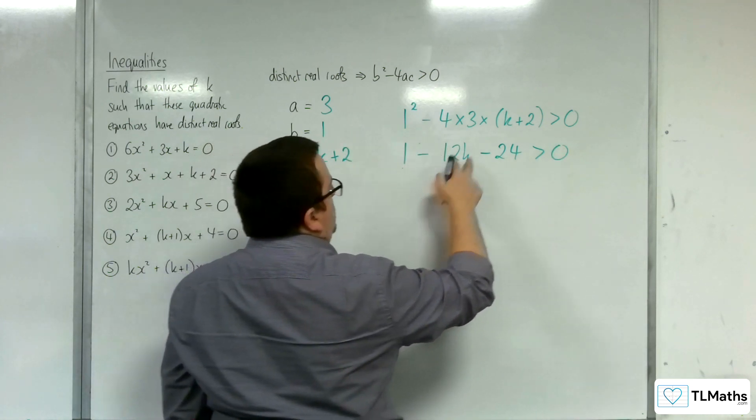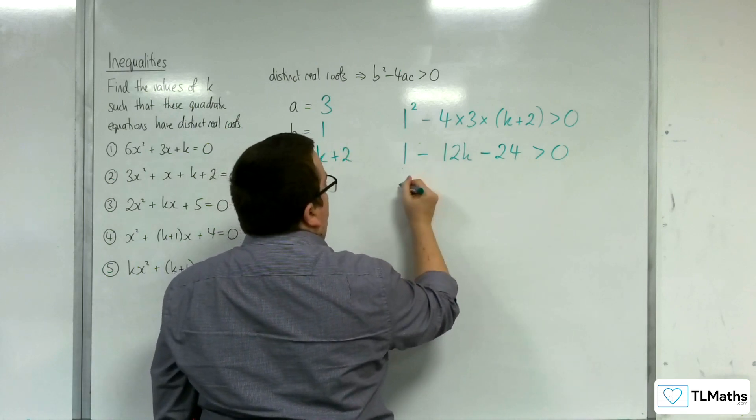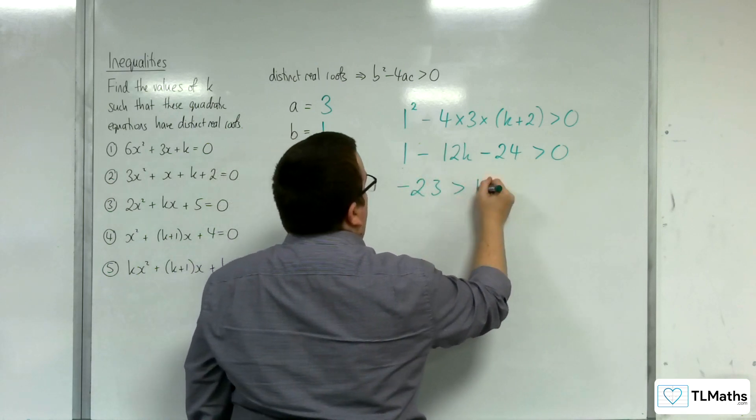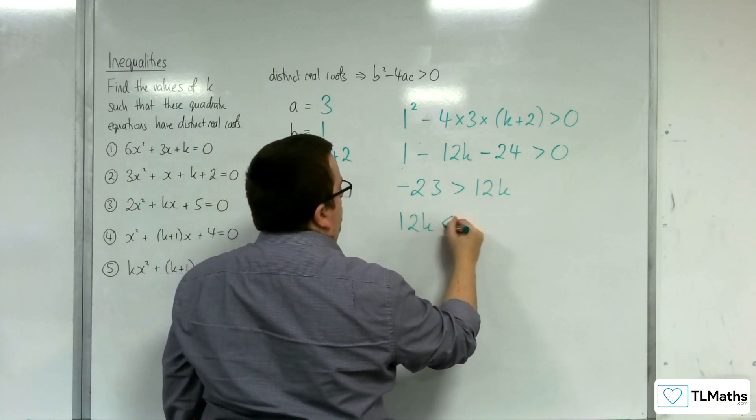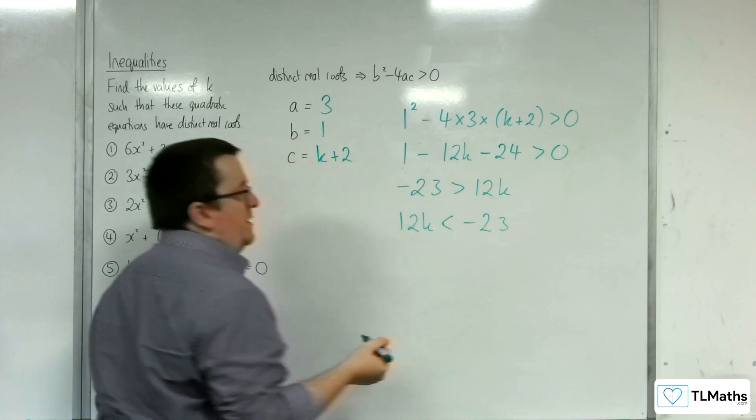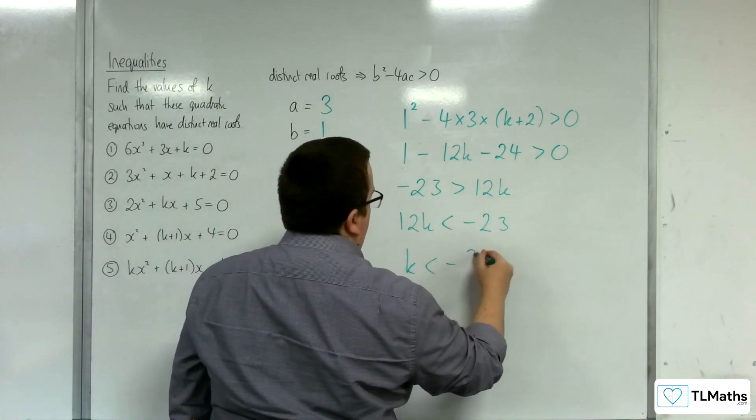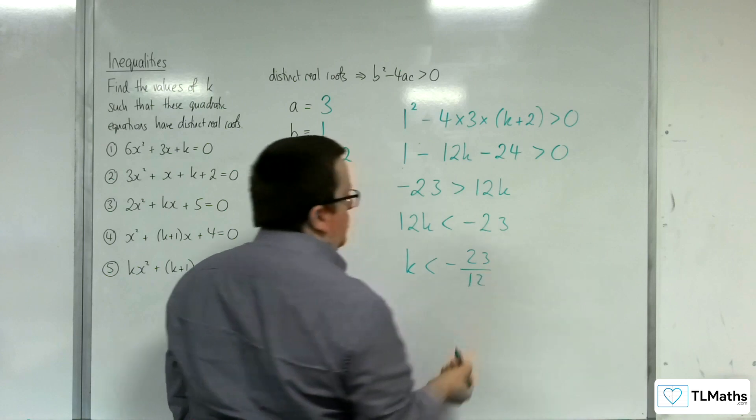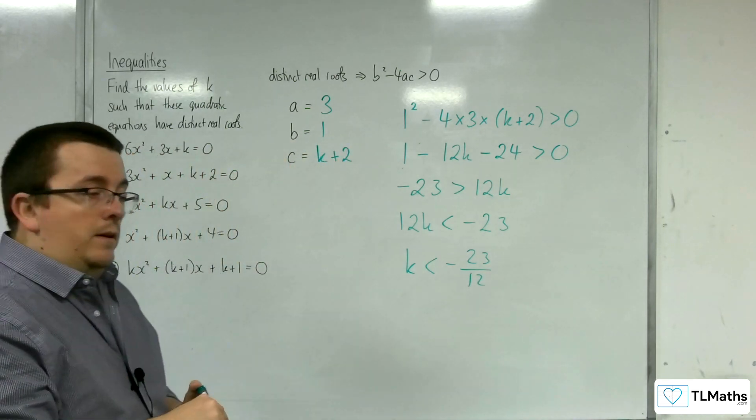Let's move the 12k over to the other side. We've got 1, take away 24, so minus 23 is greater than 12k. Or, reordering that, you can write it around that way. And so, k is less than minus 23 twelfths. That's our answer to number 2.